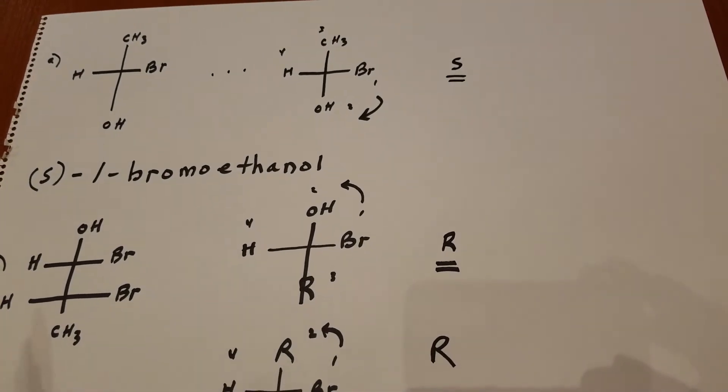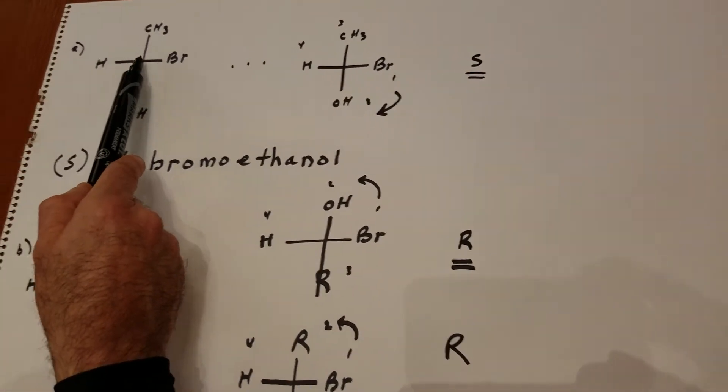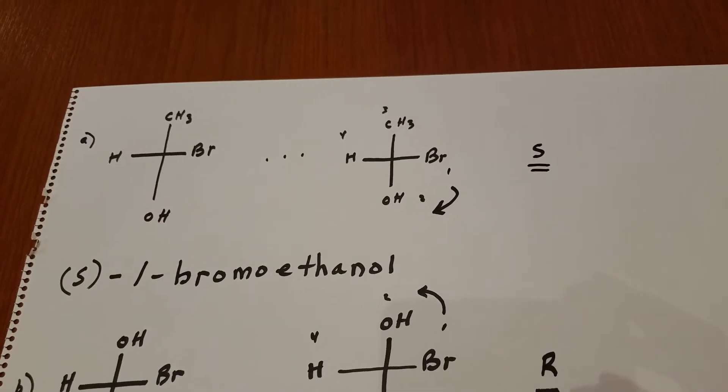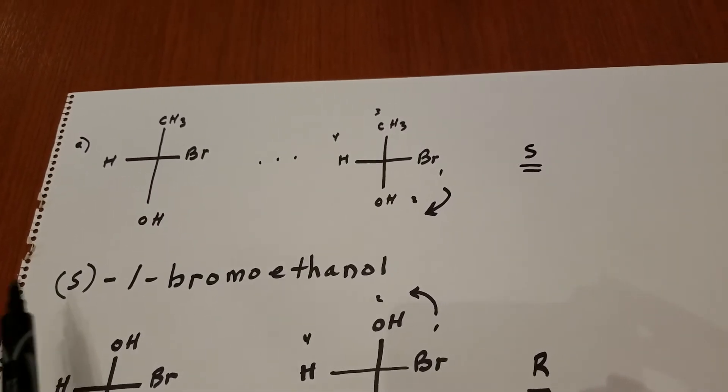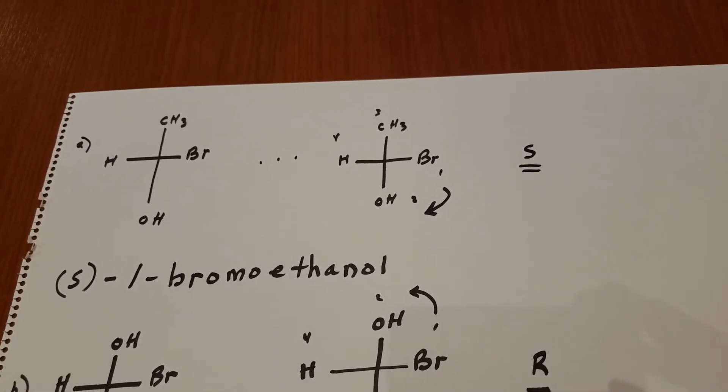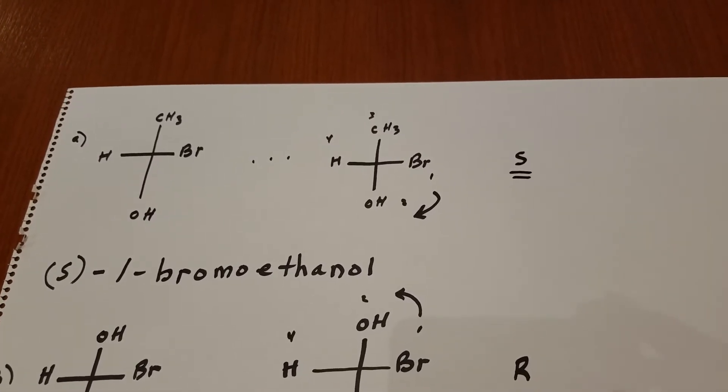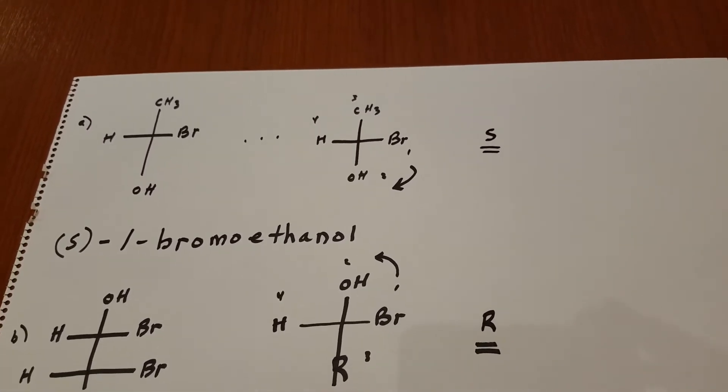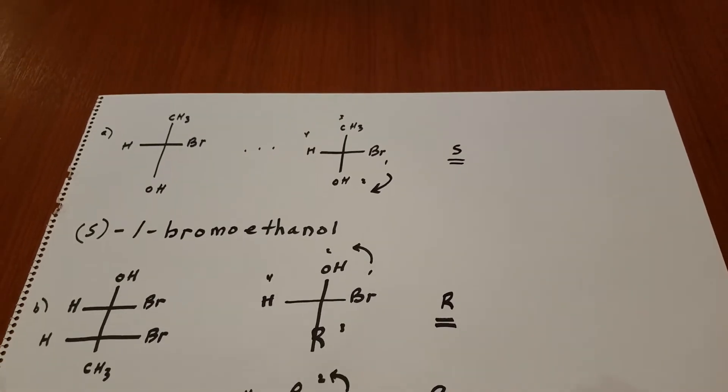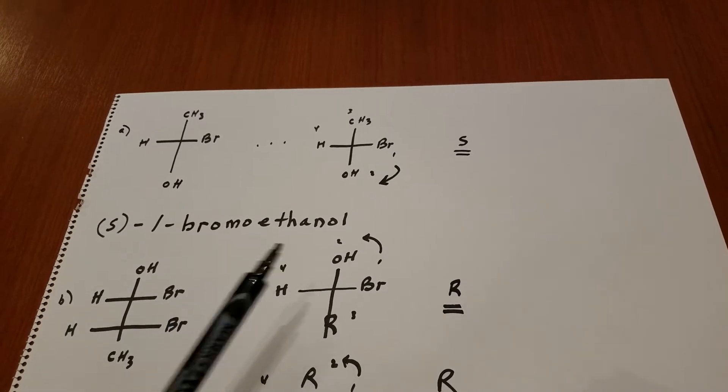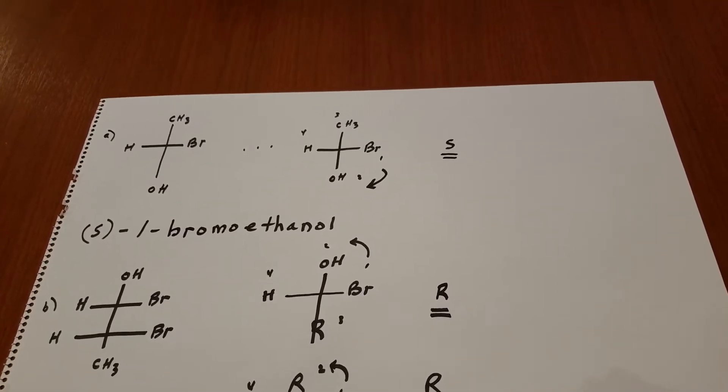Now that we know it's an S, we're ready to name it, this being carbon one, this being carbon two. So you put this stereochemical descriptor in front of the name, that being an S. So it's an S-1-bromoethanol. Obviously, if you were to buy this molecule from a chemical company, since it's chiral, you would have to specify, do you want the R enantiomer or the S enantiomer?